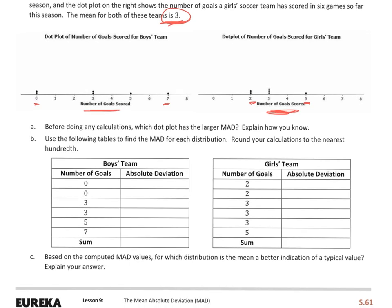So, part A says, before doing any calculations, which dot plot has a larger MAD? Explain how you know. Well, I know that the boys have a larger MAD or mean absolute deviation because their data is much more varying than the girls' is. So, that's what I'll put down for my explanation. So, there's my statement right there.